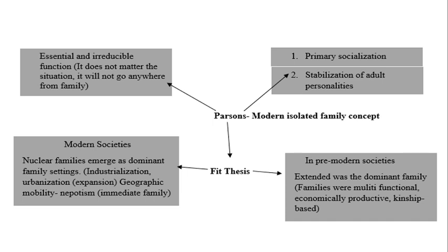According to Parsons, there are basically two irreducible functions of the family. Although the nuclear family performs reduced functions, it is still the only institution that can perform two core functions: the first is primary socialization, and the second is stabilization of the adult personality. The nuclear family is still responsible for teaching children the norms and values of society, known as primary socialization.